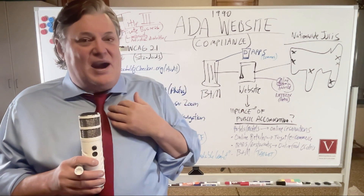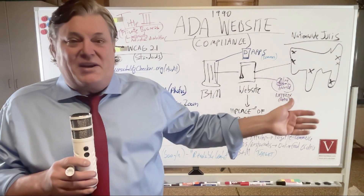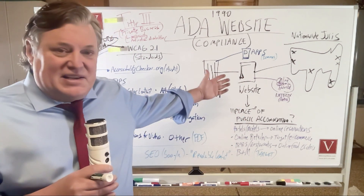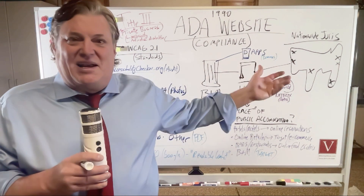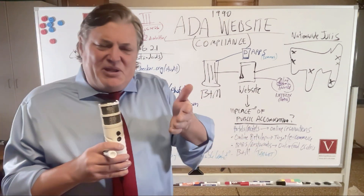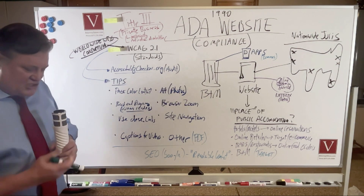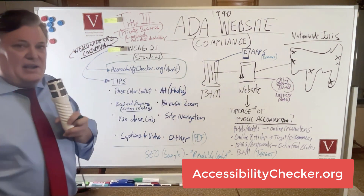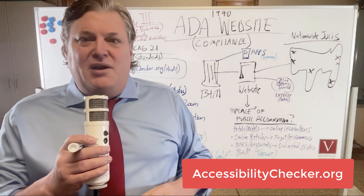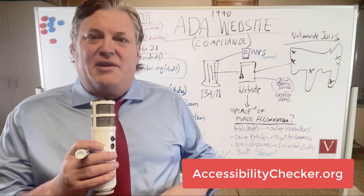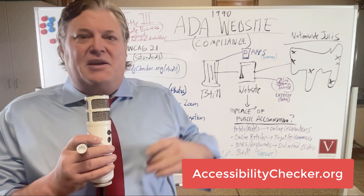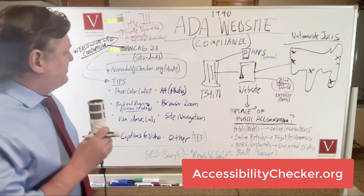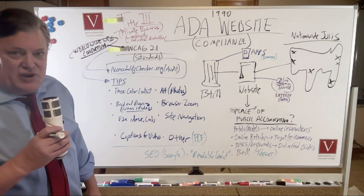I would rather pay now — say $7,500 to upgrade my website and make it more accessible and inclusive — than pay that in a settlement and then have to go pay that again. If you're a company owner, check it out. Go to accessibilitychecker.org, put your URL in there, and they will run an audit at no charge and point out the issues on your website. I had them too.